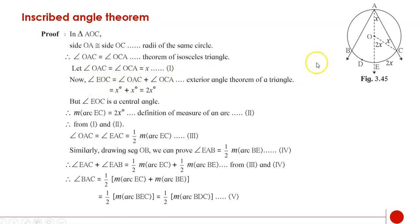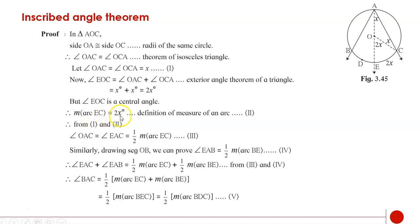Now angle EOC equals angle OAC plus angle OCA by the exterior angle theorem of a triangle — the exterior angle equals the sum of the interior opposite angles. Since OAC and OCA are both X, angle EOC equals X plus X which is 2X degrees. Since EOC is a central angle, measure arc EC is also 2X degrees by the definition of measure of an arc. This is statement 2.